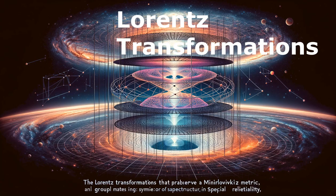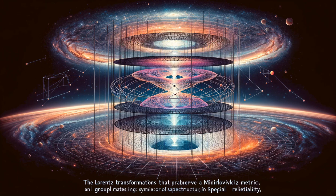Lorentz transformations. Transformations that preserve the Minkowski metric are known as Lorentz transformations, which form a group under matrix multiplication. Extending the Lorentz transformations leads to the more general Poincaré group, which includes the symmetries of spacetime in special relativity.